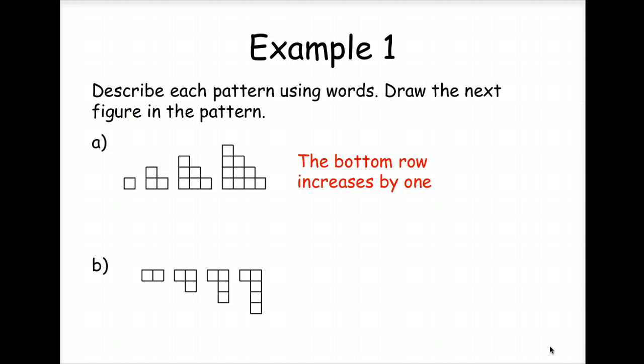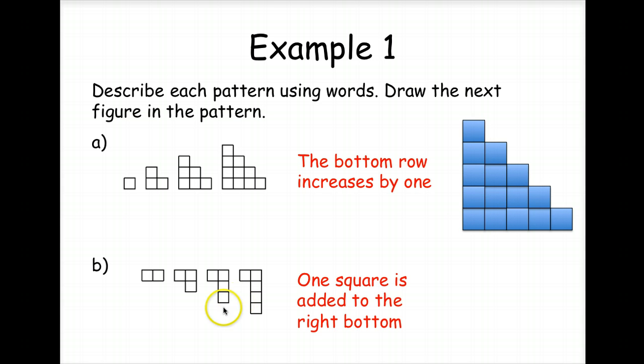Well, first of all, we notice that the bottom row increases by one square, right? So when we draw the next figure in the pattern, we draw one more square, so we've got five across the bottom. So here's a picture of what our pattern would do to this figure.